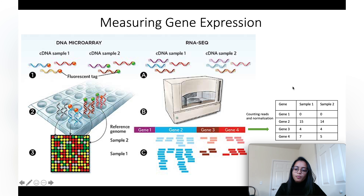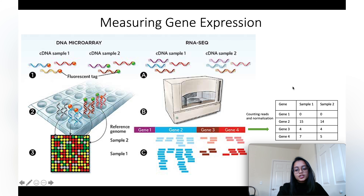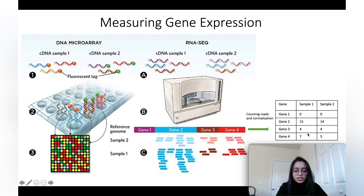Some common normalization methods are TPM, RPKM, FPKM, or CPM. I'll create a video in the future explaining each of these normalization methods. But essentially, this is how a gene expression matrix or gene quantification matrix is generated, based on the number of reads mapped to the genome.